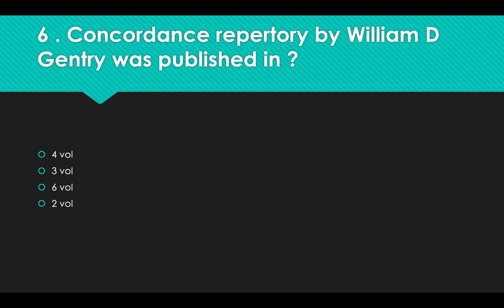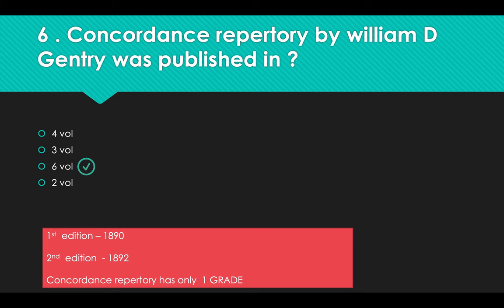Concordance Repertory by William D. Gentry was published in how many volumes? Options: A) 4 volumes, B) 3 volumes, C) 6 volumes, D) 2 volumes. Answer: Option C, 6 volumes. First edition published 1890, second edition 1892. The Concordance Repertory has only one grade.